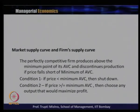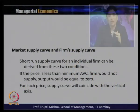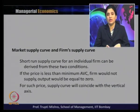From the shutdown condition, two conditions emerge. Condition one: if price is less than the minimum of AVC, then shut down — output equals zero. Condition two: if price is greater than or equal to the minimum of AVC, then choose the output that would maximize profit. The short-term supply curve for any individual firm can be derived from these two conditions.